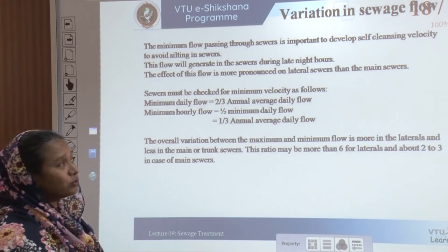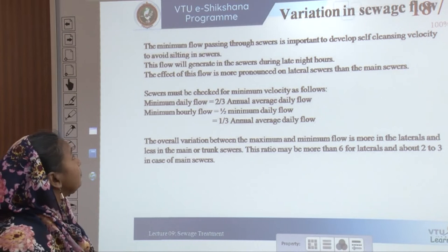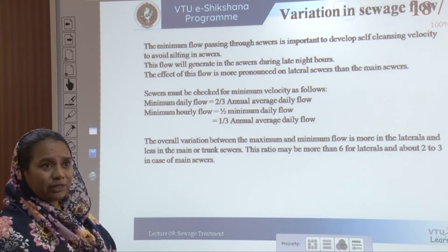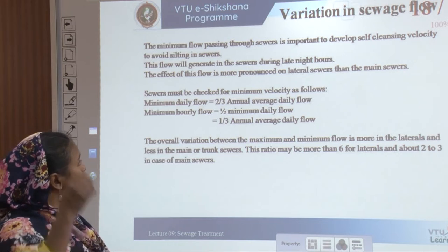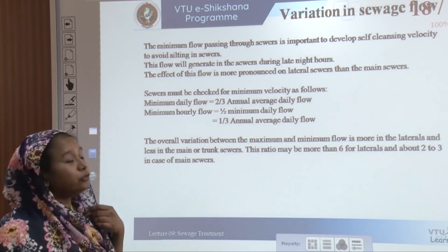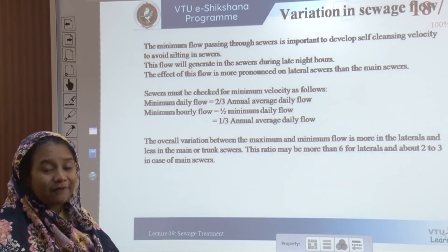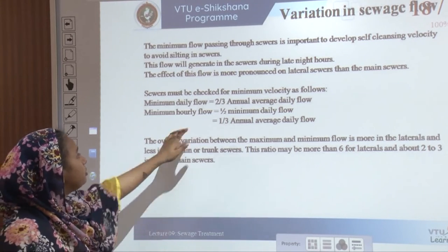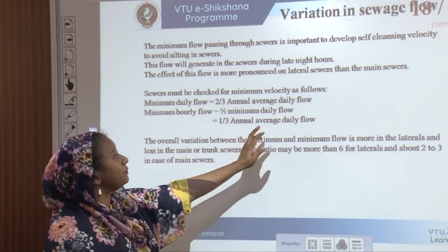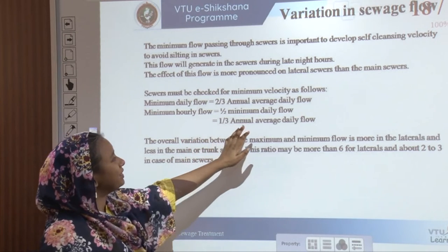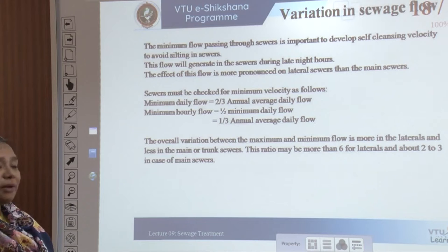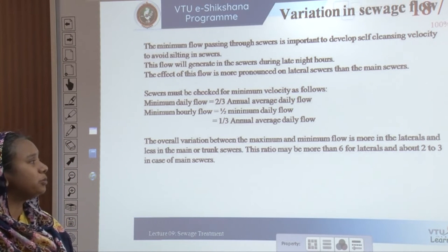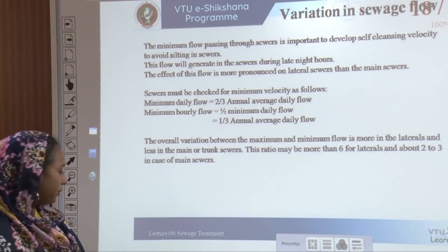The minimum flow passing through sewers is important to develop self-cleansing velocity and avoid silting. The minimum flow occurs during late night hours. This effect is more pronounced in lateral sewers than main sewers, as main sewers have continuous flow while lateral sewers do not during sleeping hours. Sewers must be checked for minimum velocity: minimum daily flow should be at least two-thirds of the annual average daily flow, and hourly flow should be at least half the daily flow. The variation ratio should be more than 6 for laterals and about 2 to 3 for main or trunk sewers.